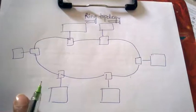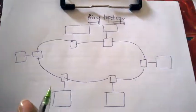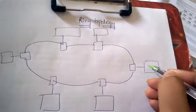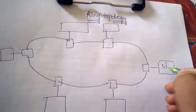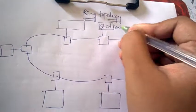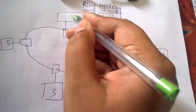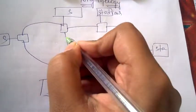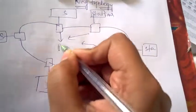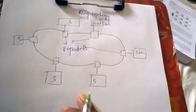Welcome back to Best Way to Study. In this tutorial we are going to discuss about ring topology. This is the architecture of ring topology — these are called the stations, and these are called repeaters.